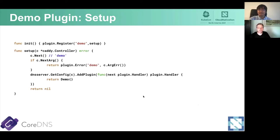At the top of this slide we see the init function, which is fairly simple — we call plugin.Register with the name of this plugin, which is 'demo', and the setup function. The setup function, as we saw on the previous slide, takes a Caddy controller. It's fairly simple because the demo plugin doesn't use a lot of configuration — it's just 'demo' in the Corefile. So we skip that word 'demo', and we don't expect any other arguments. If there are, we return an error. If everything looks good, we tell CoreDNS that this plugin needs to be added to the plugin chain for this server so we can run the demo plugin, and we return nil indicating no errors.